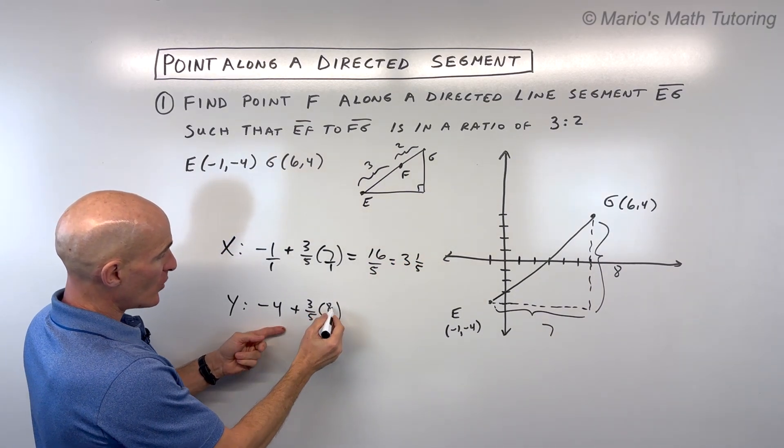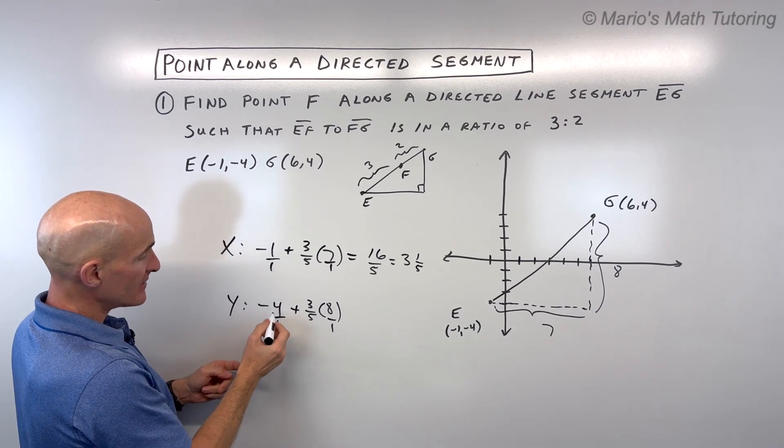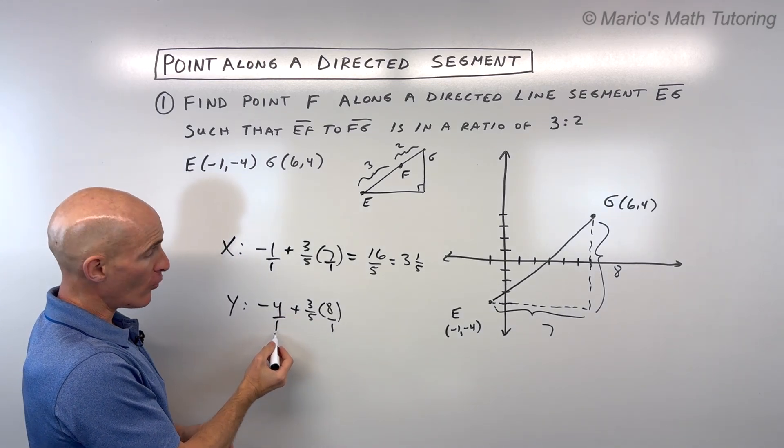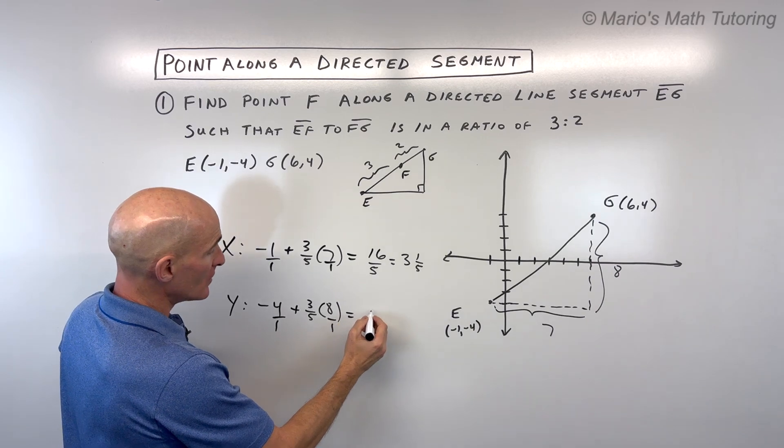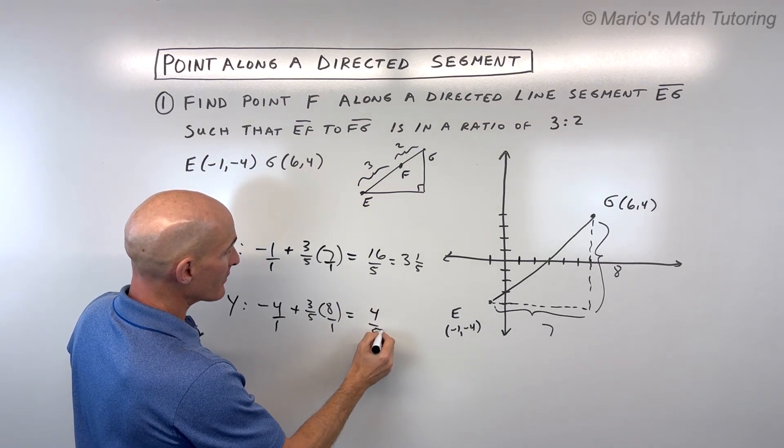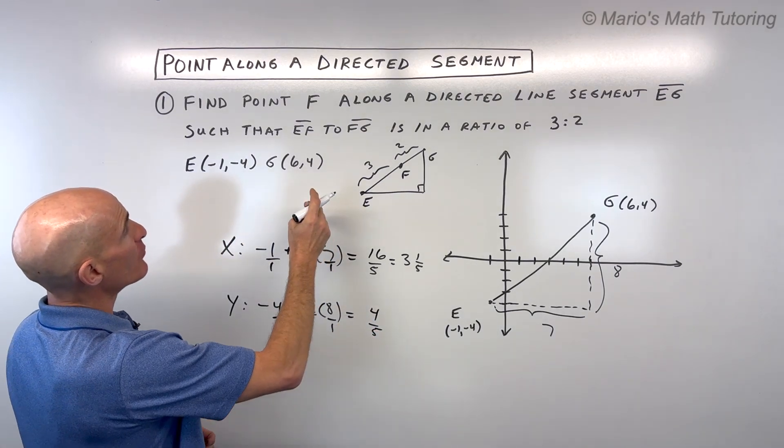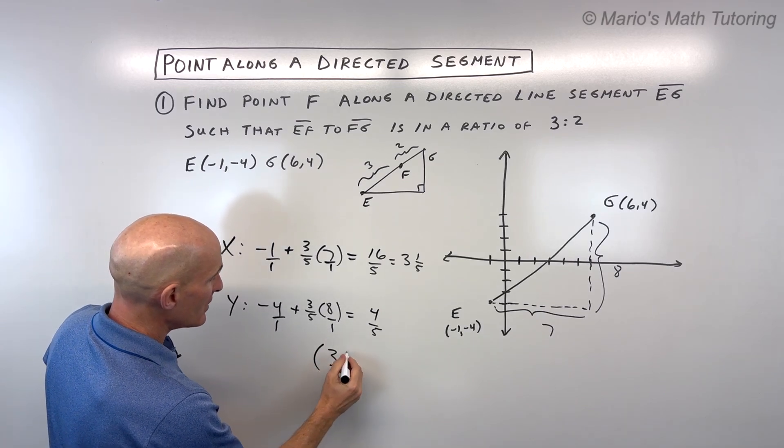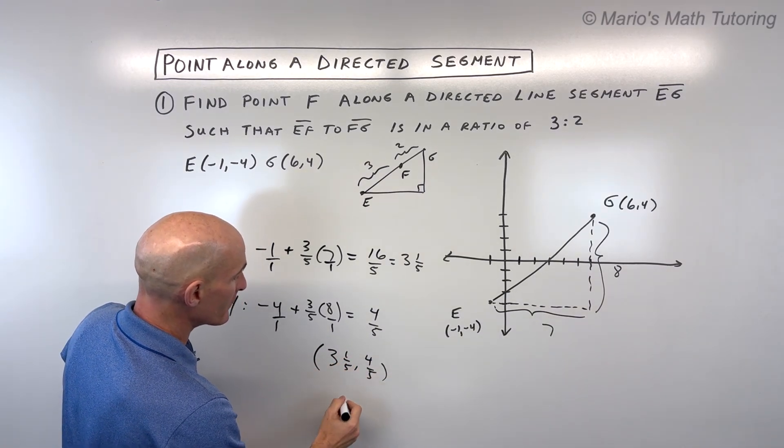Over here now, we've got 24 over 5. This is like negative 20 over 5. So that comes out to 4 over 5. So that means that the location of point F here is going to be at 3 and 1 fifths, comma 4 fifths.